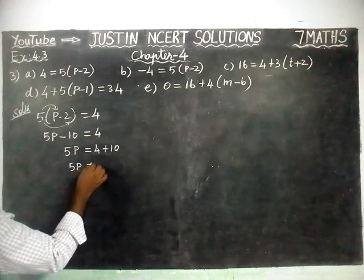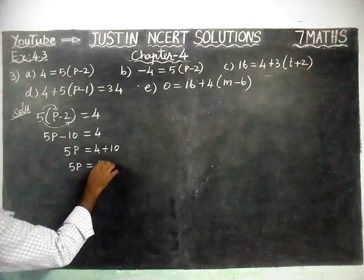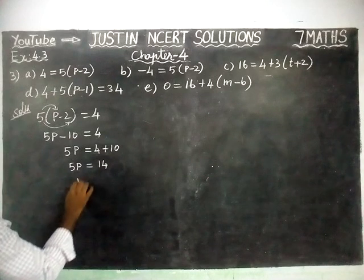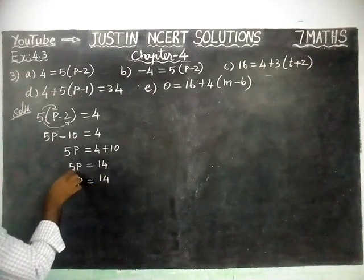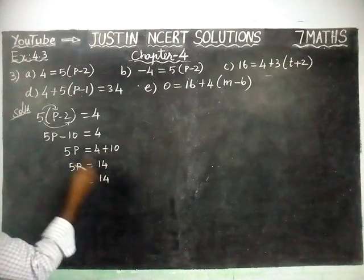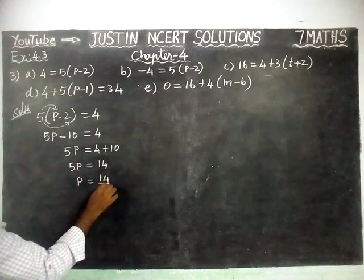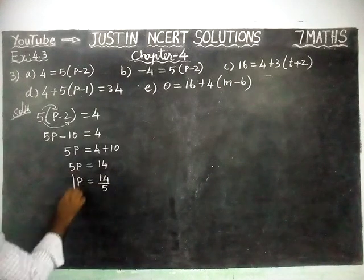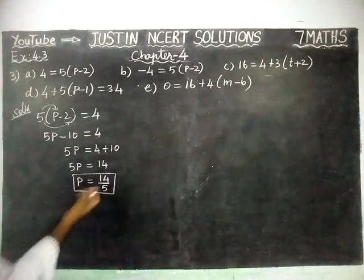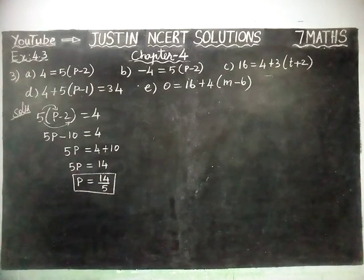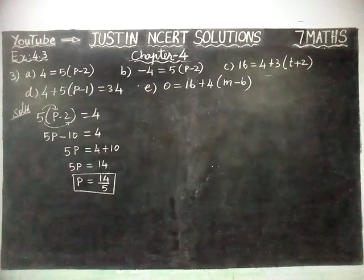5P is equal to 4 plus 10, which equals 14. P is equal to 14. This multiplication is going to the right hand side, so that becomes division. P is equal to 14 divided by 5. Hereafter we cannot divide it by any common number, so as it is, we have written: 14 by 5.